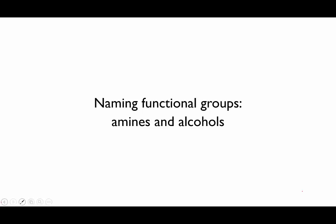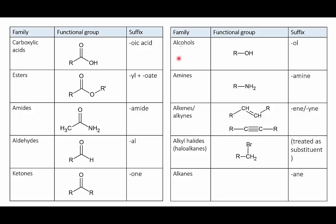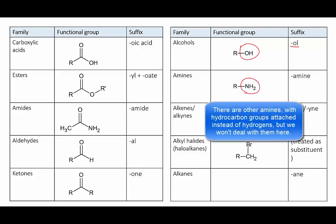In this video we'll look at some examples of naming amines and alcohols. Amines and alcohols are structurally similar. In alcohols there is an oxygen-hydrogen, OH group, attached somewhere to the molecule. When that happens the suffix of the name becomes -ol. In amines there is a nitrogen-hydrogen, usually NH2 group attached, and then the suffix is -amine.